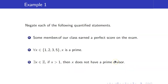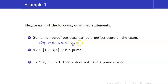For example, negate: 'Some members of our class earned a perfect score on the exam.' 'Some' indicates there exists, so the negation changes 'some' to 'all': 'All members of our class did not earn a perfect score on the exam.' Next, negate 'for all x in {1, 2, 3, 5}, x is prime.' This becomes: 'There exists x in {1, 2, 3, 5} such that x is not prime.'